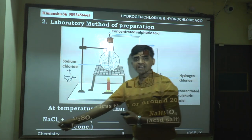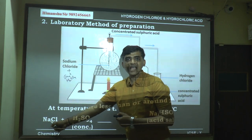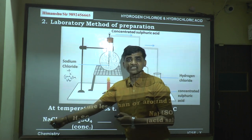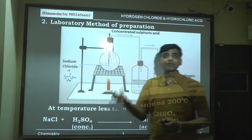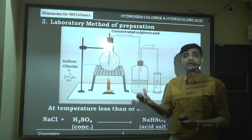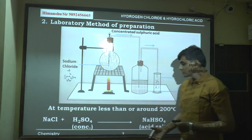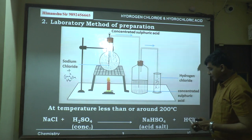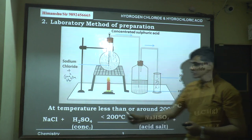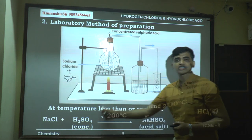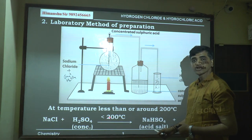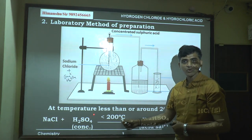The first reactant is sodium chloride (NaCl) — it is cheap and easily available. Concentrated sulfuric acid is used because it is non-volatile and has a high boiling point, so it can easily displace the highly volatile HCl gas from the salt. The temperature must be kept below 200°C.